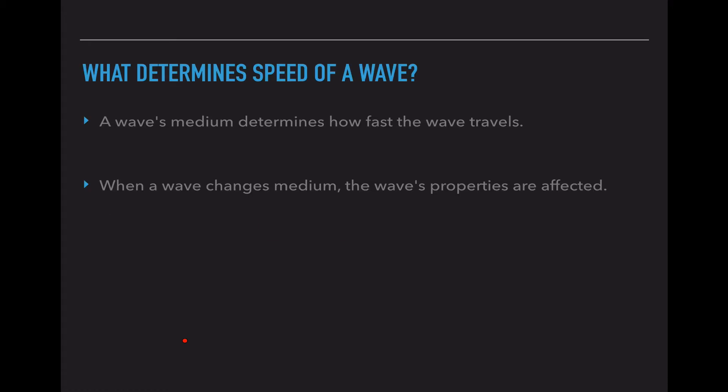The first thing we have to look at is the idea that the wave's medium determines how fast the wave travels. That means that when a wave changes medium, the wave's properties are affected. Now medium is just a fancy word for substance or stuff that it travels through. So the medium is like air or water or a slinky, and if we change the medium going from air into water or water into air, that will affect the wave's properties.